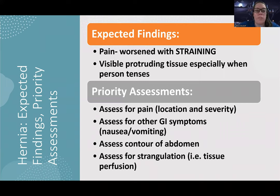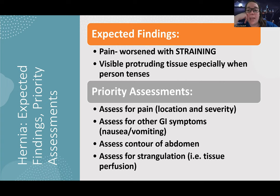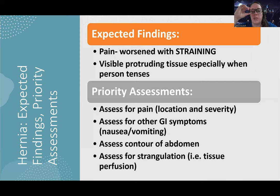What I would expect a patient to complain about or what I'd expect to find: I would expect to see visible protruding tissue, especially when the person tenses their body. Sometimes they can also have pain, especially when straining — I always think of that episode of Friends where Joey gets a hernia working out and it hurts really bad. He keeps trying to push it back in but ends up needing surgery. Pain can be present or it can be painless and it's just tissue moving. We want to assess for pain and other GI symptoms, making sure it's not getting worse. I can't see from the outside that the tissue is dying — I can't see black tissue or anything like that.